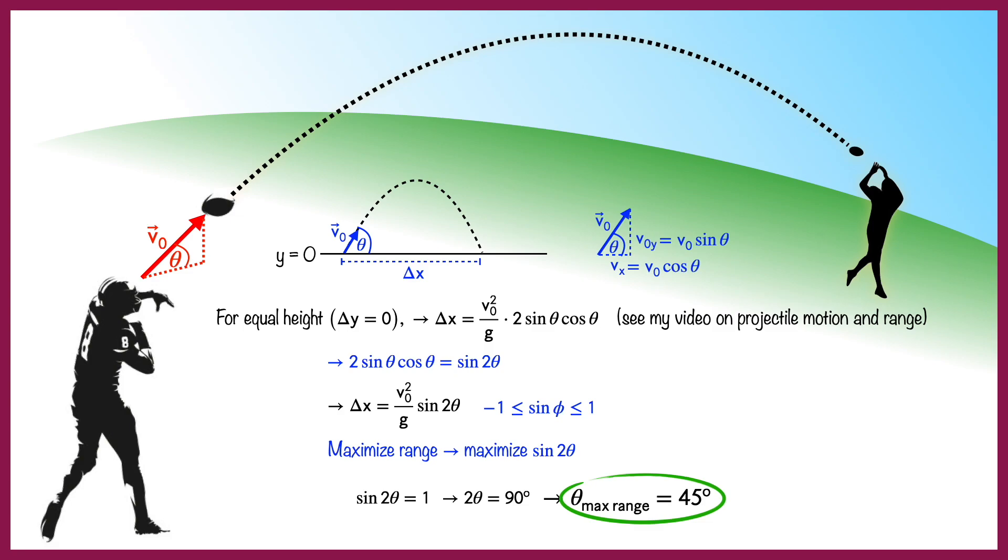This holds in the absence of effects due to air resistance. If you include air resistance, it turns out you have to throw the ball at an angle slightly greater than 45 degrees.